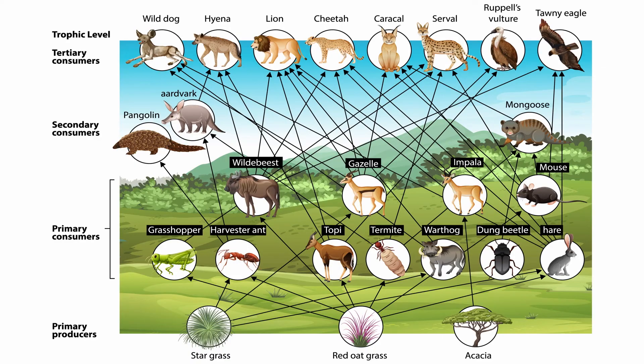Now that we've covered food webs and trophic cascades, we are beginning to understand how interactions between species in a community have profound effects on an ecosystem as a whole. Let's continue this line of thinking and examine behavioral ecology next.